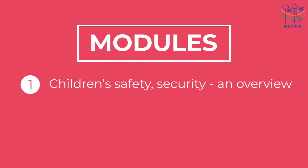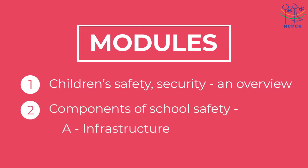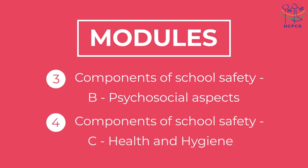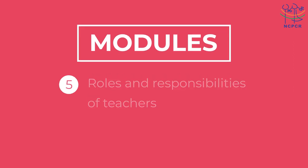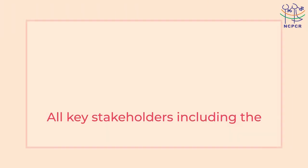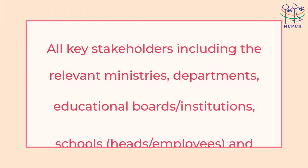The program has six modules: 1. Student Safety and Security – An Overview; 2. Components of School Safety – A. Infrastructure; 3. Components of School Safety – B. Psychosocial Aspects; 4. Components of School Safety – C. Health and Hygiene; 5. Roles and Responsibilities of Teachers; 6. Monitoring. All key stakeholders including the relevant ministries,